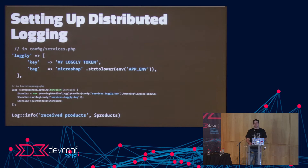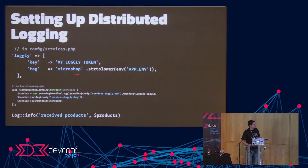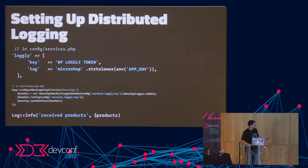Then we set up distributed logging, which is the cool part. In Laravel you just set up a new provider with the API key, tag it with your service name, and tell Monolog — which handles all Laravel logging — to use the new Logly handler and push all events to Logly. We then use the Laravel facade to log info just to confirm we're actually getting it to the device.